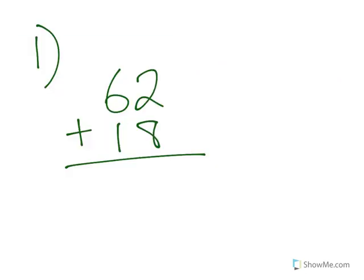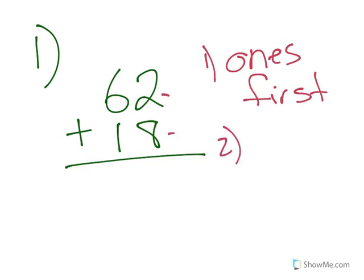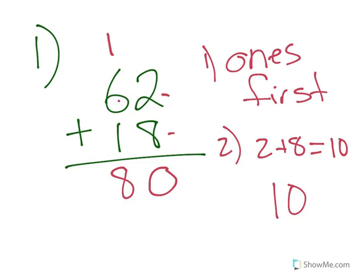Let's practice! Here's our first one: 62 plus 18. When we're adding, we do the ones first - remember, we always start with the ones. We have 2 plus 8, which is 10. We're gonna put the 0 down and bring up that 1. Now we do 1 plus 6 which is 7, plus 1 is 8. So our total is 80.